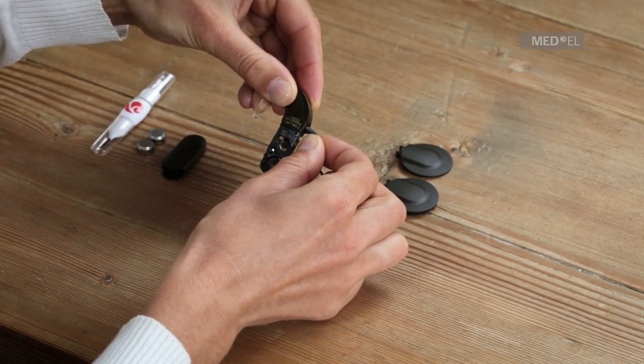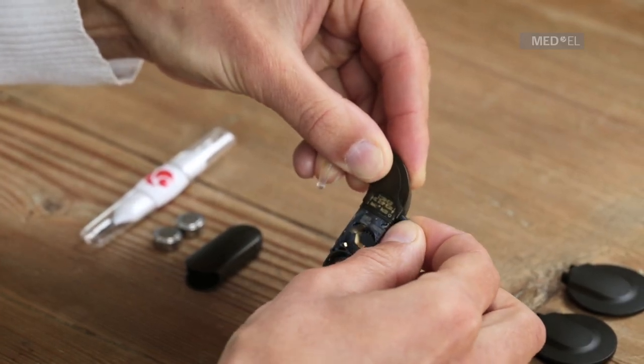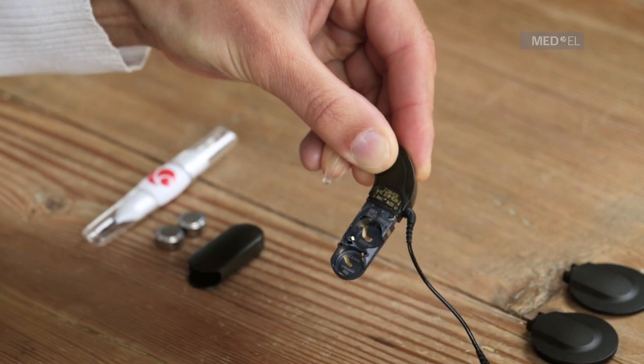Plug the coil cable into the control unit. Note the correct orientation of the coil cable socket and be careful not to use too much force.